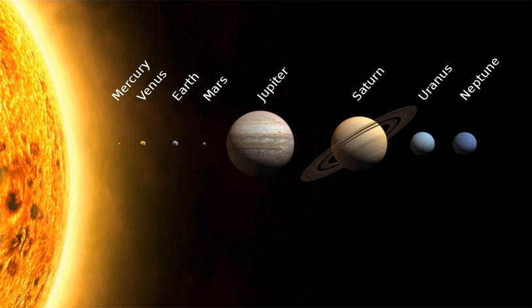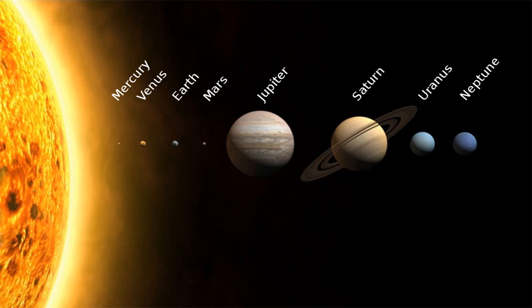Six of the planets, the six largest possible dwarf planets, and many of the smaller bodies, are orbited by natural satellites, usually termed moons after the Moon. Each of the outer planets is encircled by planetary rings of dust and other small objects. The solar wind, a stream of charged particles flowing outwards from the Sun, creates a bubble-like region in the interstellar medium known as the heliosphere. The heliopause is the point at which pressure from the solar wind is equal to the opposing pressure of the interstellar medium. It extends out to the edge of the scattered disk. The Oort Cloud, which is thought to be the source for long-period comets, may also exist at a distance roughly a thousand times further than the heliosphere. The solar system is located in the Orion Arm, 26,000 light-years from the centre of the Milky Way galaxy.